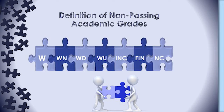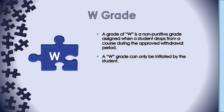Let us begin by reviewing the definitions of non-passing grades which may be assigned to students. We will also discuss the impact these grades have on a student's academic record. The first grade is the W grade. The grade of W indicates a student has officially withdrawn from a course during the withdrawal period. The withdrawal period is indicated on the academic calendar for every term and session and can be found on the Office of the Registrar's website. It is important to note that a grade of W is not available to select on the final grade roster, and this grade cannot be changed via the grade roster.